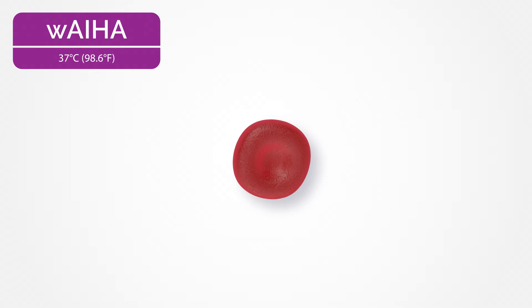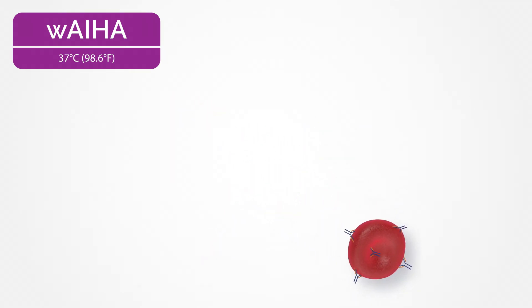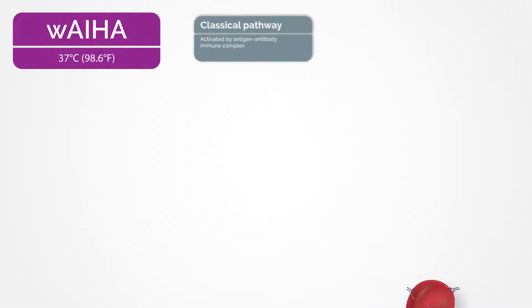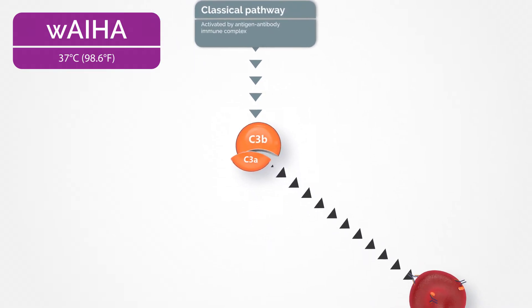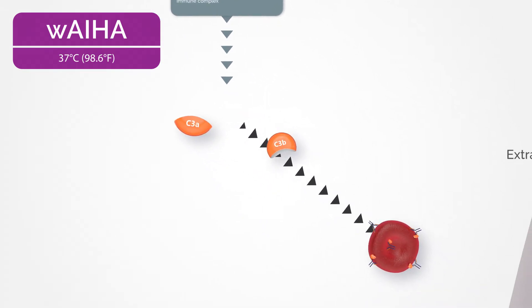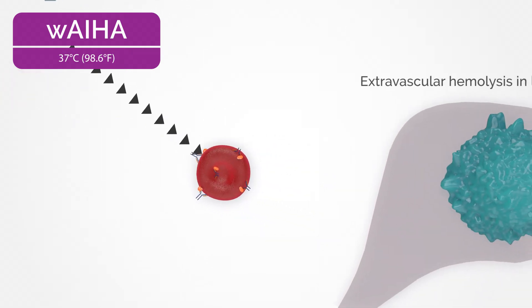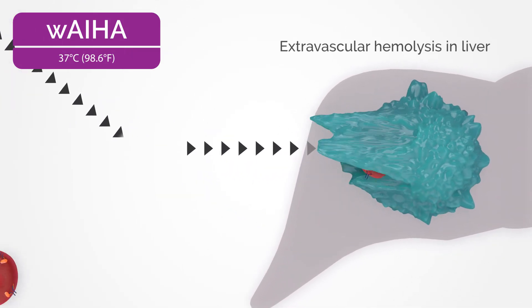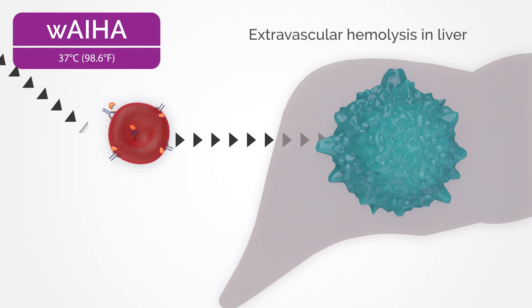In warm AIHA, IgG antibodies improperly bind to self-proteins on the surface of red blood cells, activating the classical complement pathway, which causes C3B to attach to the cell surface, resulting in extravascular hemolysis — the destruction of red blood cells in the liver and spleen.